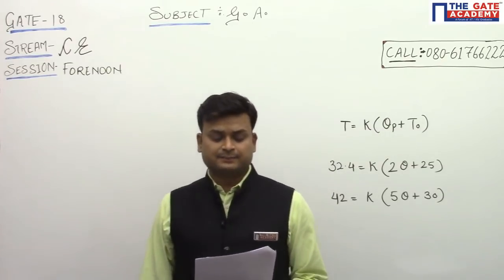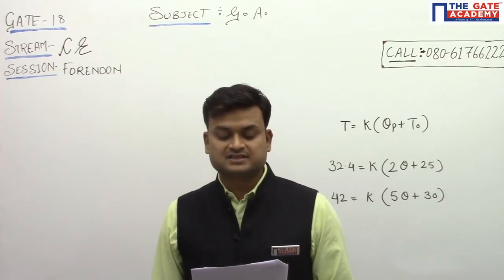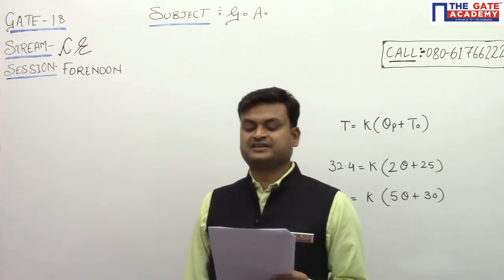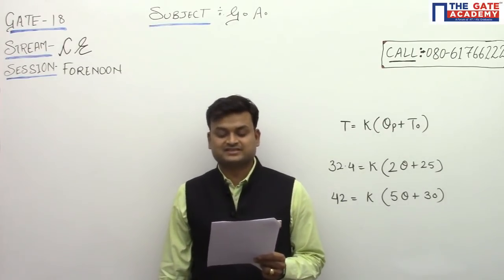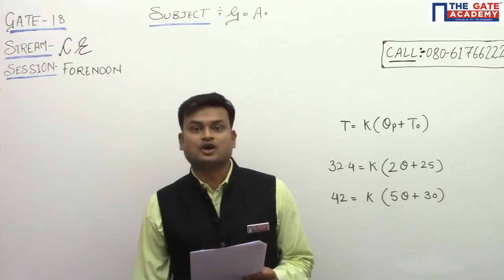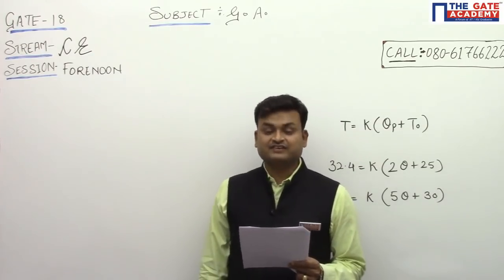The temperature T in a room varies as a function of the outside temperature T0 and the number of persons in the room according to the relation T equals K times (theta times P plus T0), where theta and K are constants. What would be the theta value if the following data is given?